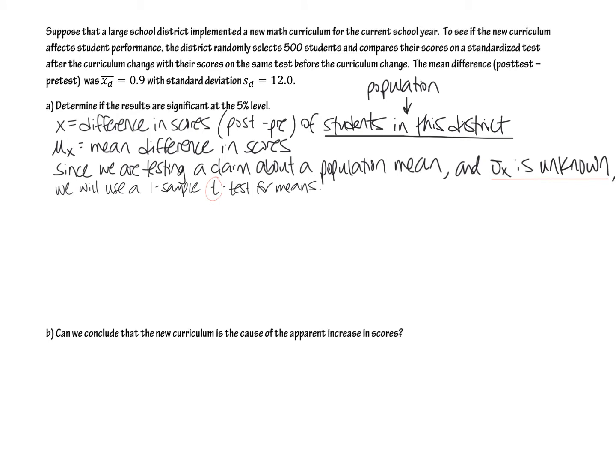So in this case, we are testing a claim about a population mean. Remember that we're going to be using a t-test since we aren't given the standard deviation of the population, only the sample standard deviation. So since our sigma x is unknown, we only have a sample standard deviation. That is why we're using a t-test for means. So yeah, we're going to have to use t-CDF in the calculator instead of normal CDF because it's not exactly a normal distribution. It is a t-distribution.